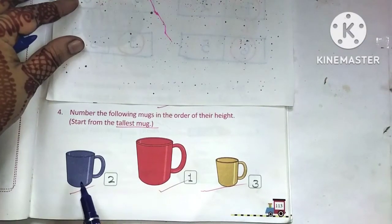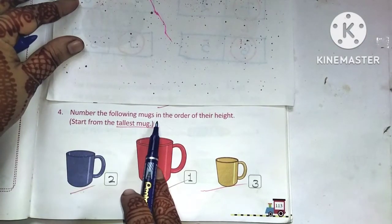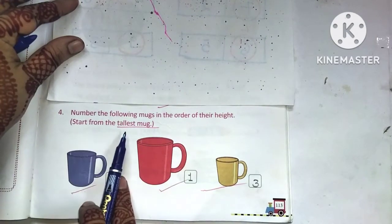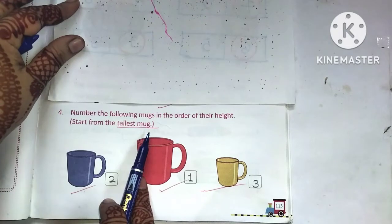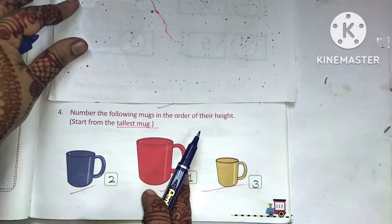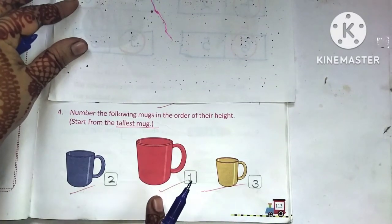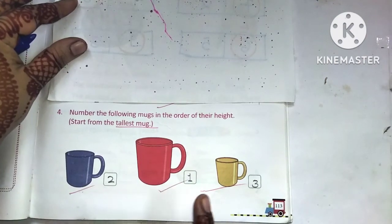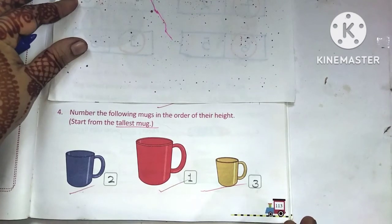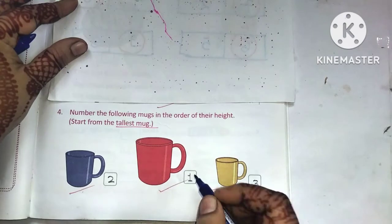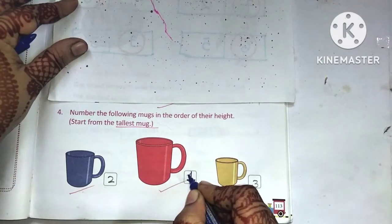Next question: number the following mugs in order of their height, starting from the tallest. We have to arrange the mugs by height. The biggest, tallest mug gets number 1. We will make number 1 on the biggest mug.